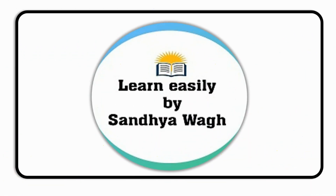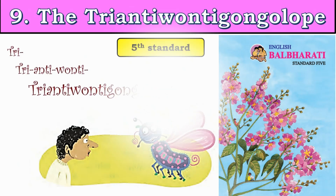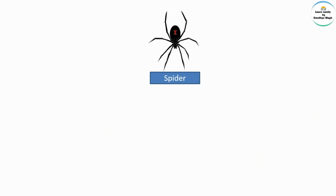Hello dear students, today we are going to learn and understand a very interesting poem from English Pal Bharati textbook, Standard 5. The poem's name is 'The Triantiwontigongolope' by C.J. Dennis.